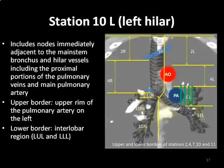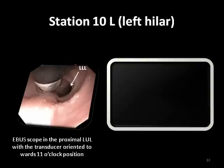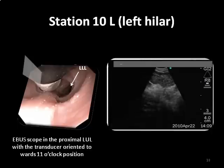Station 10L is immediately adjacent to the left main bronchus and hilar vessels, including the proximal portions of the pulmonary veins and main pulmonary artery. The upper border is the upper margin of the left pulmonary artery, and the lower border is the interlobar region between the left upper and lower lobes. To visualize hilar Station 10L, the EBUS scope is placed in the proximal left upper lobe bronchus, with the tip pressed to the bronchial wall towards the 11 o'clock position. A conglomerate of two nodes is seen in front of the left pulmonary artery located near the 7 o'clock position.